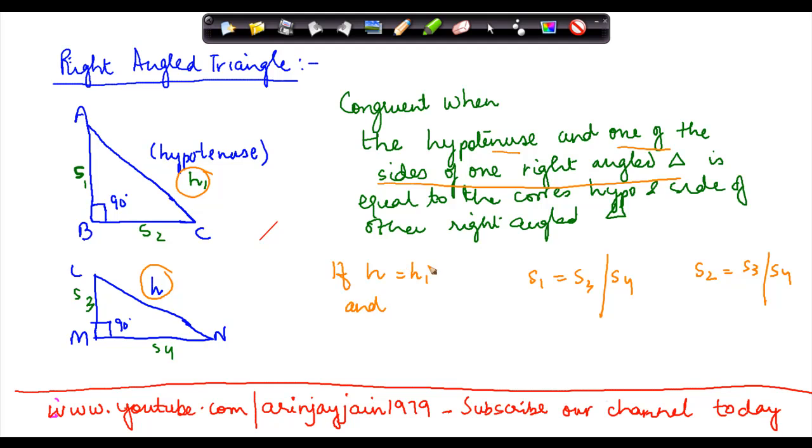So basically if H is equal to H1 and either of these two are true, then the triangles are congruent.